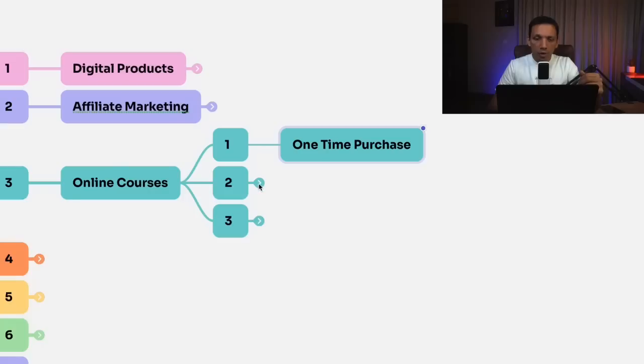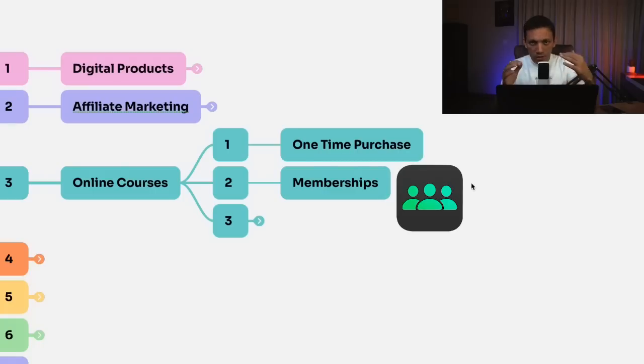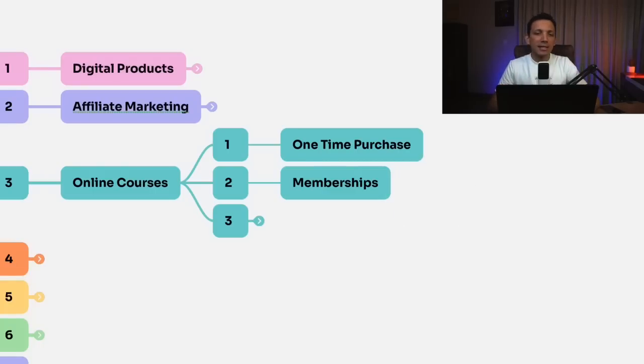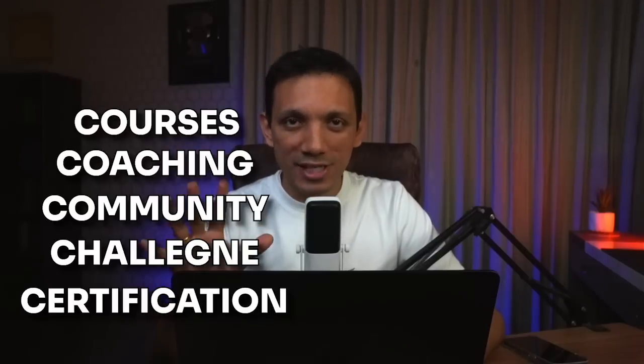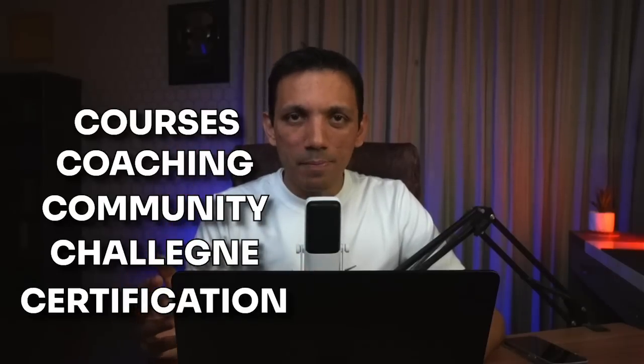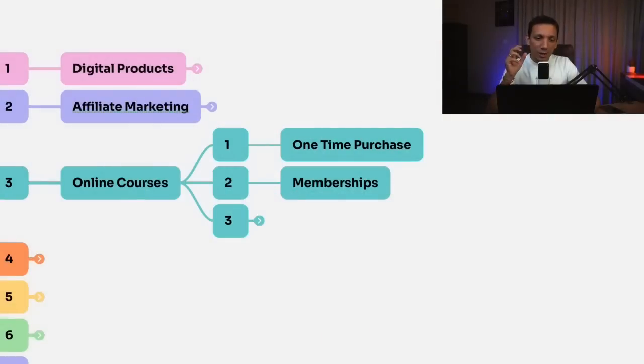The second way to monetize through courses passively is by selling memberships. Rather than selling just a single course, I tell people to become a member of my community. As part of the community, they get courses, coaching, community access, access to a challenge, and a certification — five C's. These five C's make it easier to sell the membership and create passive income. Every day people go through my websites and automated webinars, and I generate passive income by selling memberships versus just selling a course.